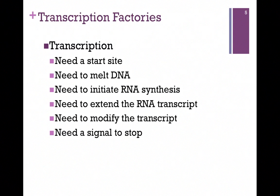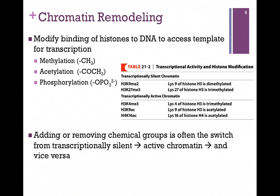As we'll see a little bit later, the RNA molecule actually becomes modified even before we finish synthesizing it. Recall that our DNA is wrapped around a histone complex in the form of nucleosomes to form our chromatin. So if we want to separate the two strands of DNA, we need to dissociate it from that histone complex, and for that reason we need to remodel the chromatin. One of the most common ways is to modify the binding of the DNA to the histones.